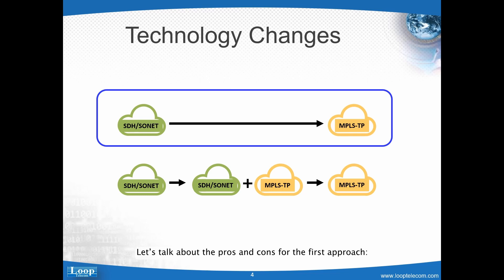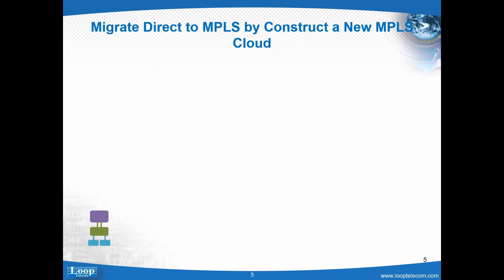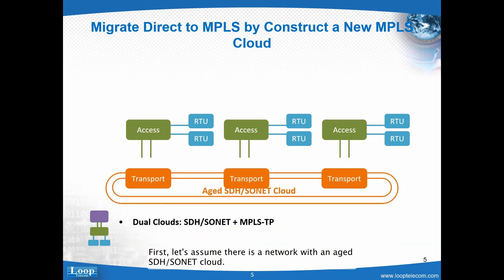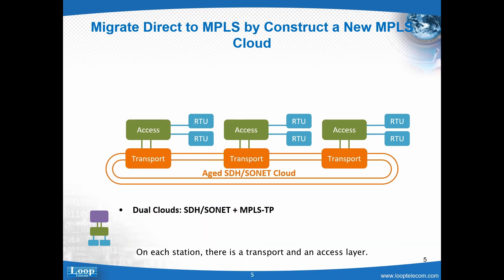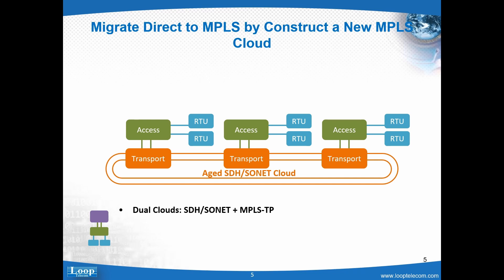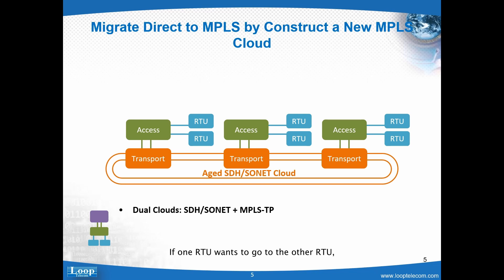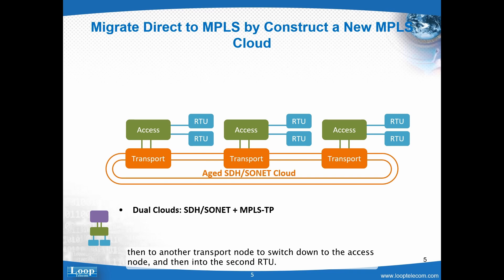Let's talk about the pros and cons for the first approach: direct shifting from SDH Sonet to MPLSTP. Assume there is a network with an SDH Sonet cloud. On each station, there is a transport and an access layer. The access layer aggregates customer equipment and goes through the transport node. All information runs through the fiber for proper switching at the transport layer. If one RTU wants to reach another RTU, it goes through the access node, then to transport, then to another transport node, switching down to the access node, and then into the second RTU. This is a very typical networking application.